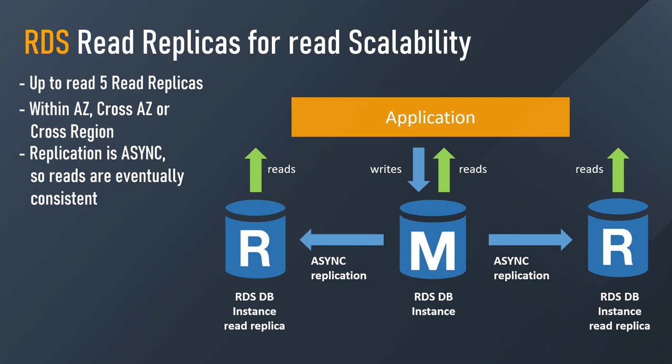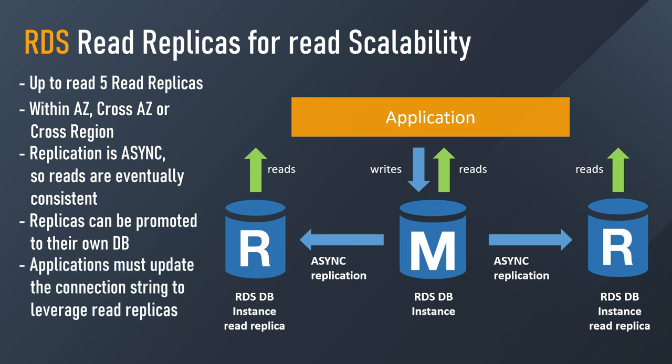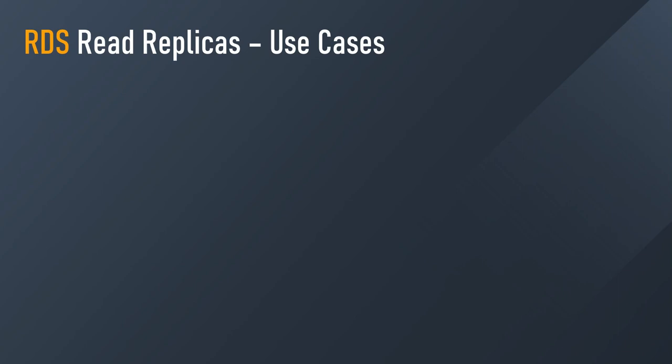These replicas are great for scaling reads, but they can also be promoted to their own database. You can take one of these replicas and promote it so it accepts writes and becomes its own standalone database — it's completely out of the replication mechanism after that and has its own lifecycle. To use Read Replicas, the main application must update its connection string to leverage the list of all Read Replicas in your RDS cluster.